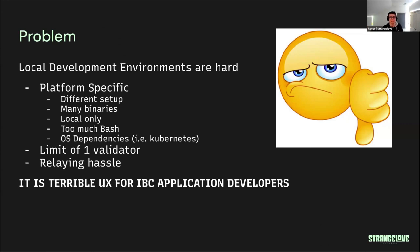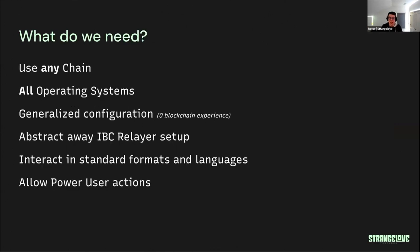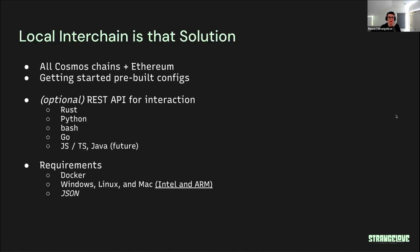What we really need: the ability to use any chain in Cosmos and ideally other ecosystems like Ethereum and Polkadot. It should support all major operating systems. It needs to be very easy to configure - you should have zero blockchain experience and be able to start up a blockchain. We abstract away all of the initial IBC relayer setup so users can just connect two chains and get started, then build on more complex protocols like ICA. You should be able to interact in a standard language - Python, Java, or Go - and power users should be able to bypass the abstractions.